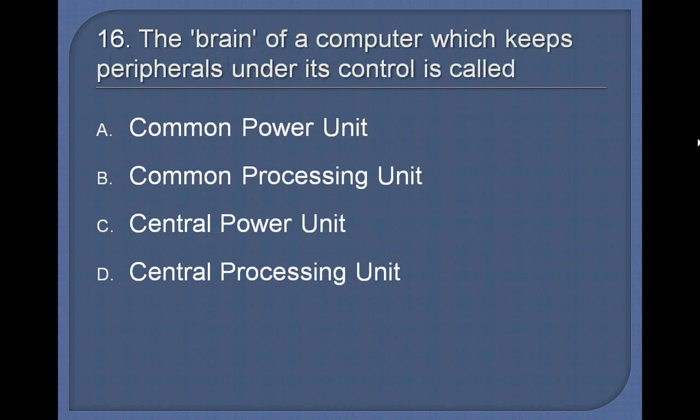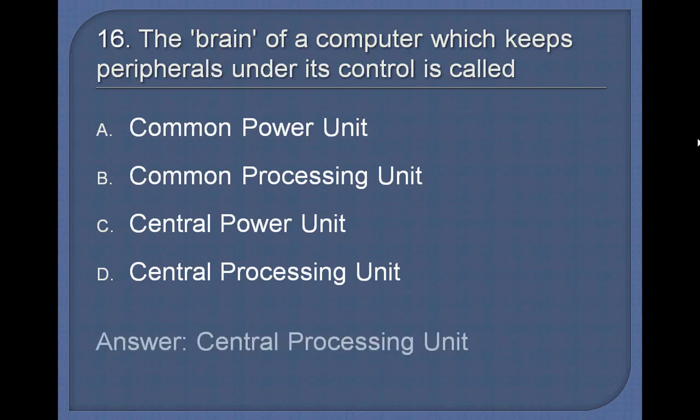Question 16. The brain of a computer which keeps peripherals under its control is called: Common Power Unit, Common Processing Unit, Central Power Unit, or Central Processing Unit? Answer: Central Processing Unit.